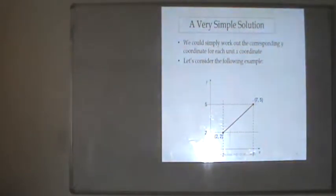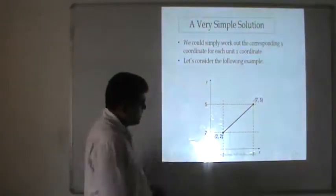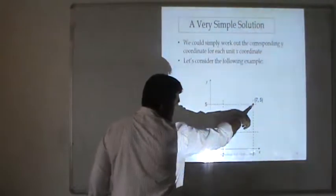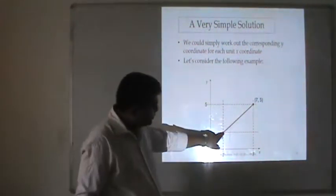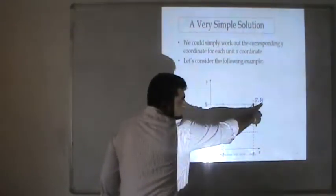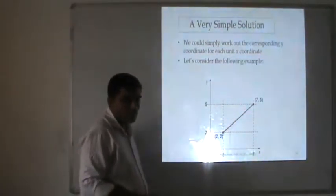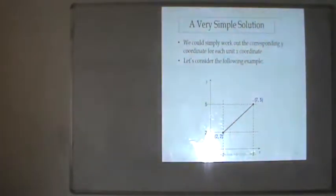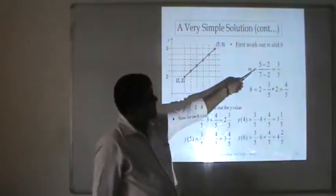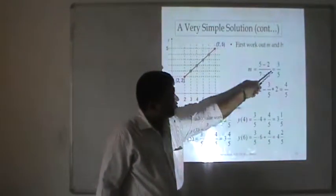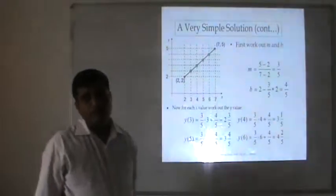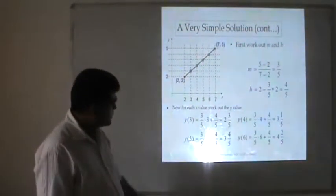A simple example: starting point (2, 2), ending point (7, 5). We find the slope: m = (y2 - y1) / (x2 - x1) = (5 - 2) / (7 - 2) = 3/5. Using y = mx + b, we find b, then calculate intermediate points. For x = 3: y = (3/5)(3) + b; for x = 4 similarly, and so on. We can find the five intermediate points this way.